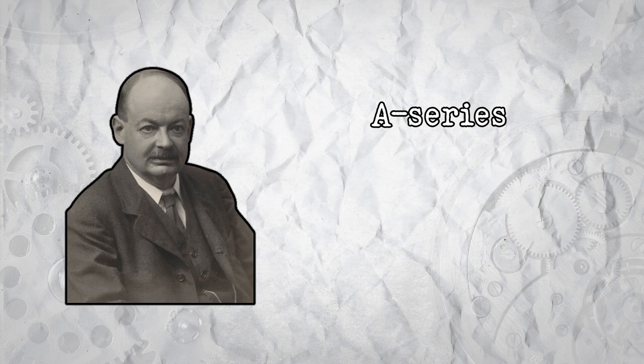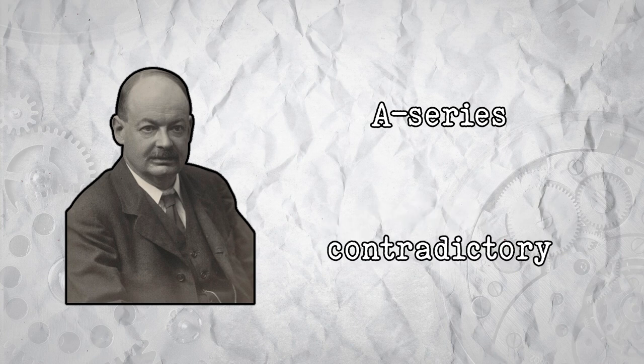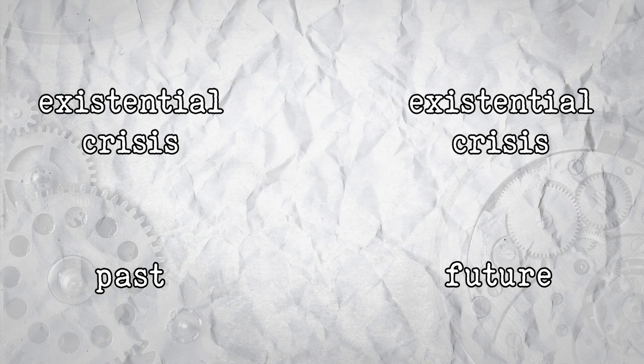However, McTaggart also argues that the A series is contradictory, because no one time can be in the future and the past at the same time. For example, if I have an existential crisis in the future, at some time this will have become the past. But that doesn't make sense on the A series, because the existential crisis has the properties of both the future and the past. We could argue that these events are not simultaneous, but rather happen in succession.